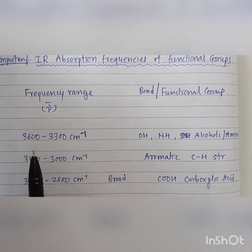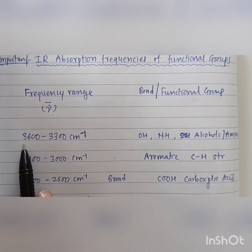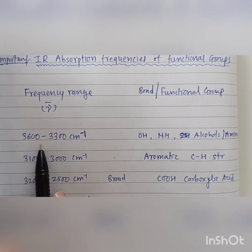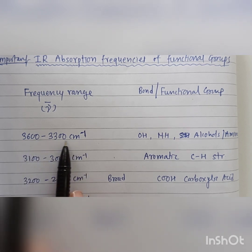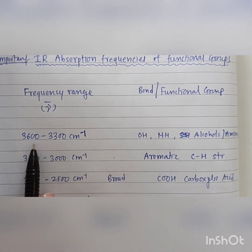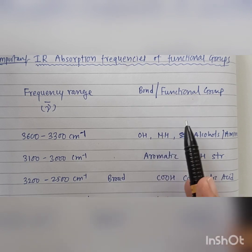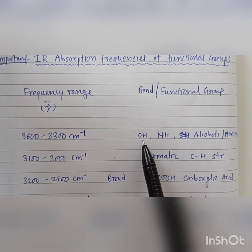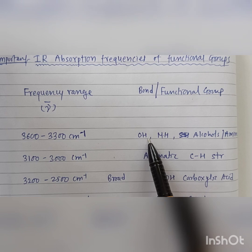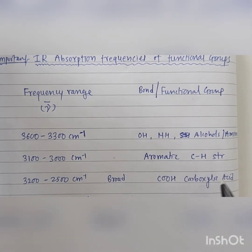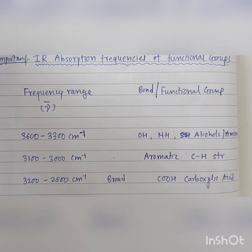From 3600 to 3300 centimeter inverse, if there are signals in this range of nu bar value, the functional group can be identified as OH or NH. The OH bond or NH bond is present, and the functional groups are alcohols or amides.